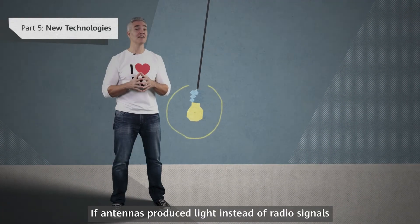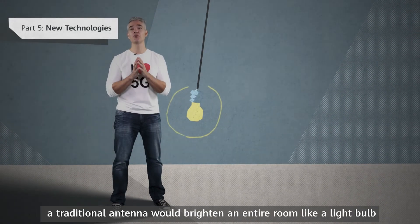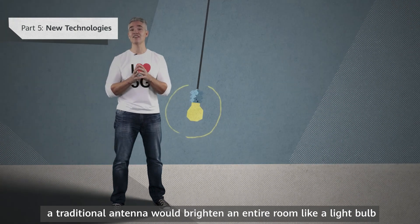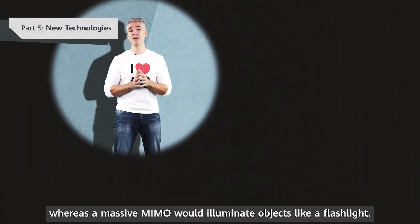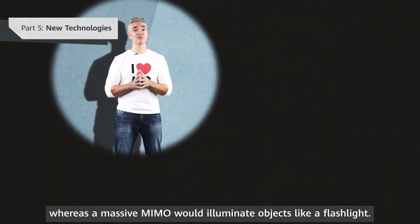If antennas produced light instead of radio signals, a traditional antenna would brighten an entire room like a light bulb, whereas massive MIMO would illuminate objects like a flashlight.